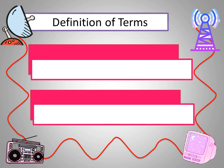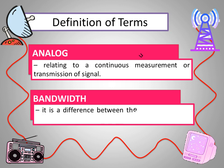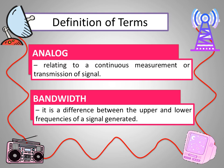Now let's define the meaning of some words. Analog: relating to a continuous measurement or transmission of signal. Bandwidth: it is the difference between the upper and lower frequency of a signal generated.